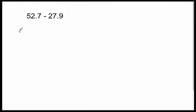All right, let's model this. When you're talking about adding or subtracting, you always want to model your numbers. The biggest place value in any of these numbers is the tens place, and the smallest place value is the tenths place. So I'm going to go from the tens place all the way to the tenths place. To the right of the tens place is the ones place, and to the right of the ones place is the tenths place, with a T-H-S.